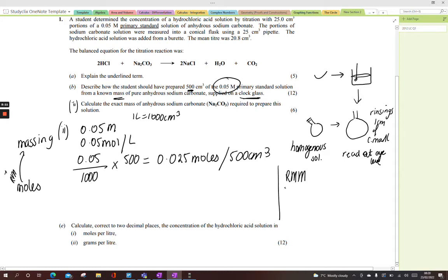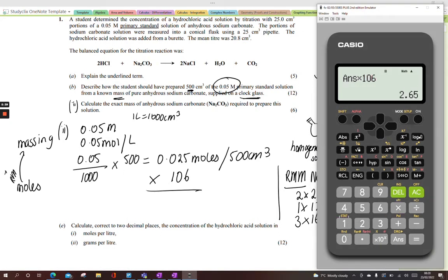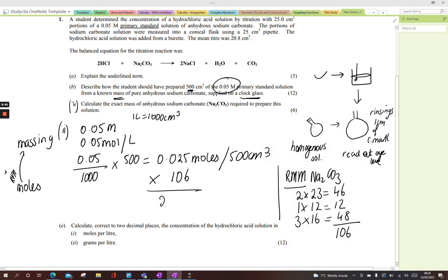Page 79 of your formula book to get your masses. Two sodium atoms, 2 × 23, one carbon atom, and three oxygen atoms. We add up all those, you get 106. I've got the number of moles, I have the relative molecular mass. Just times the number of moles by the RMM, which is 106, and I get 2.65 grams. That's how much I needed to weigh out of my anhydrous sodium carbonate.